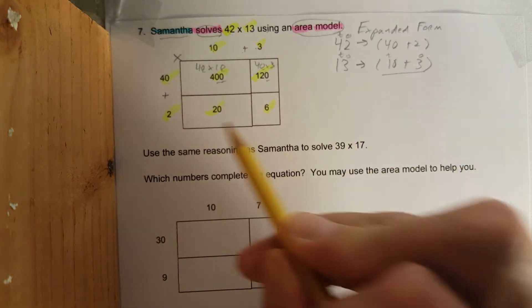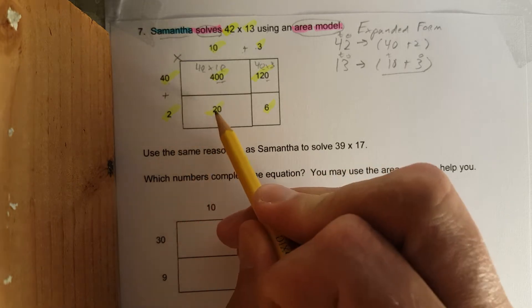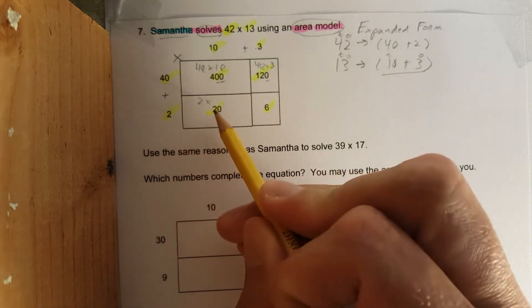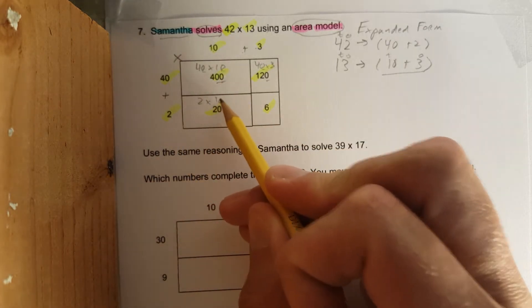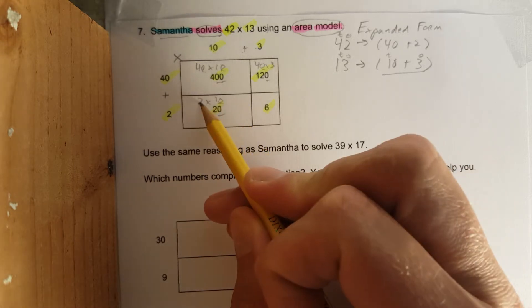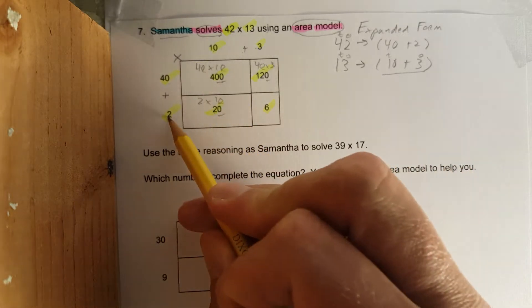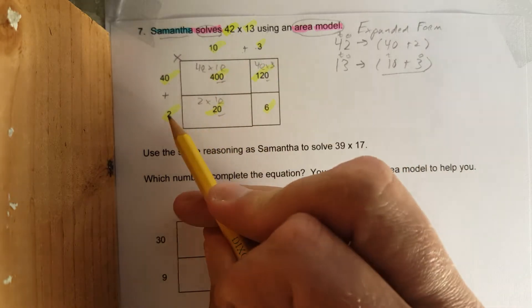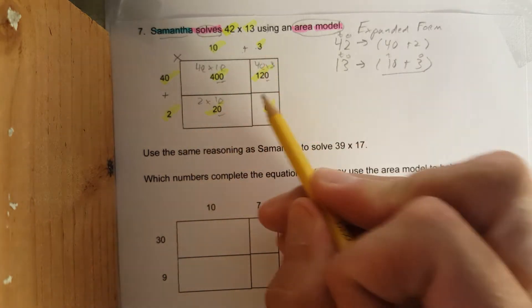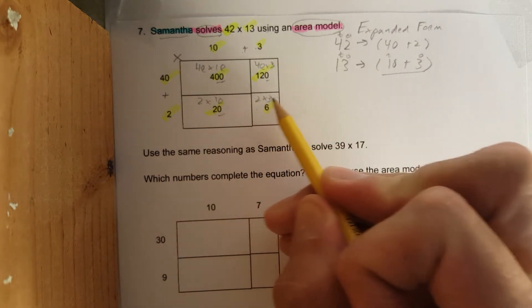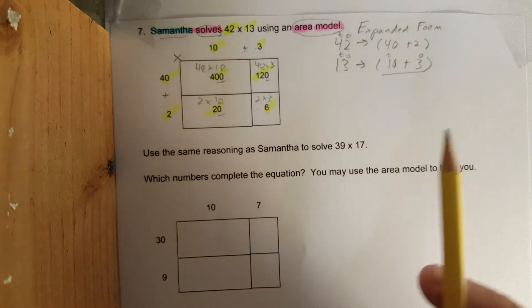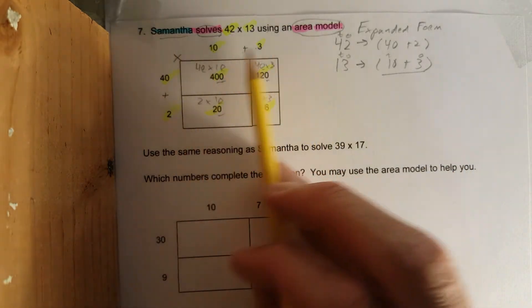2 times 10, one zero, one zero. 2 times 1 is 2. In the last box we have 2 times 3. 2 times 3 is 6. Okay, so all this makes sense, it works. Samantha, great job.